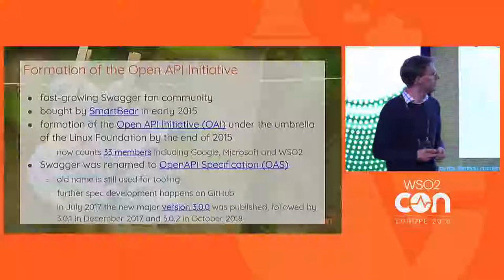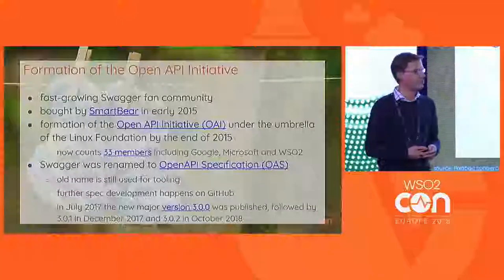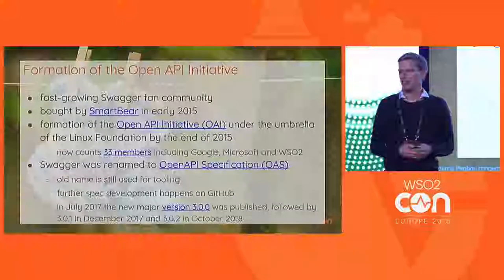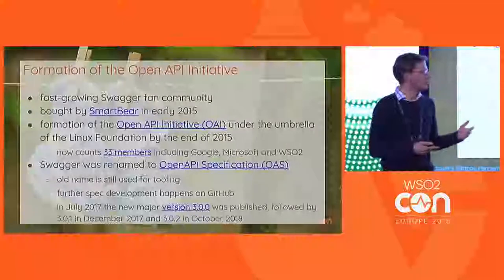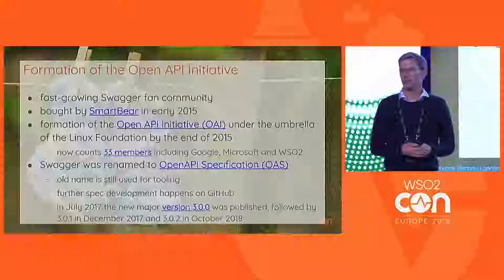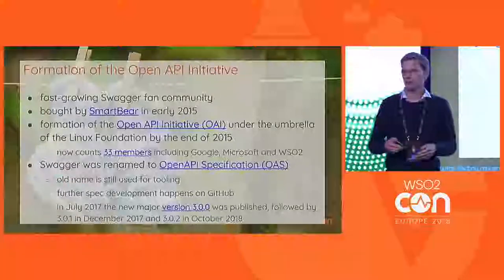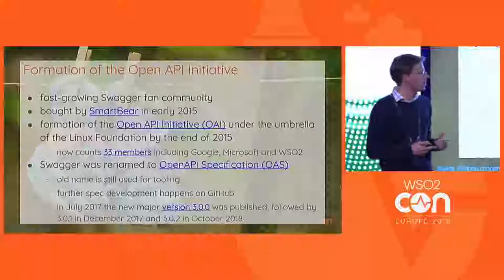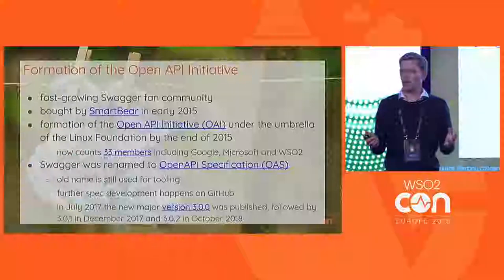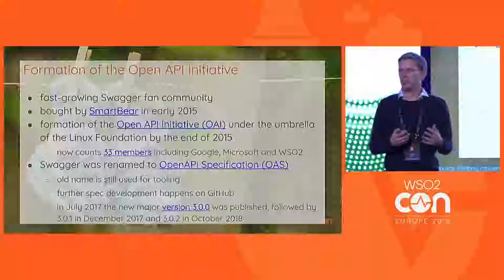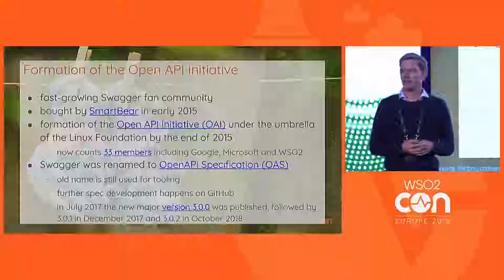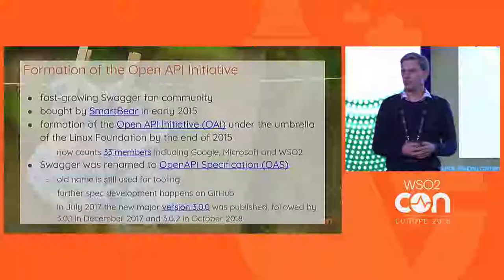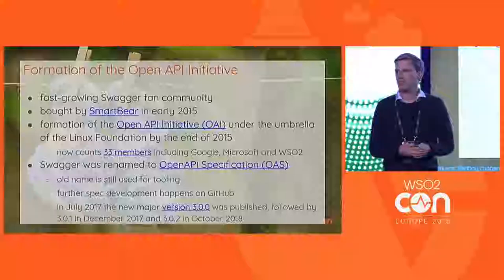Within that process, Swagger was renamed. Swagger is a really handy name and everyone is using it, but it was renamed to OpenAPI specification. You need to differentiate between Swagger and OpenAPI specification. Swagger is still a trademark of SmartBear and used for the tooling they build around it, but the specification itself is now named OpenAPI specification. So when you describe an API, you do it with the OpenAPI specification.